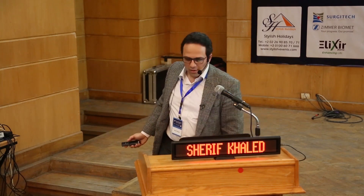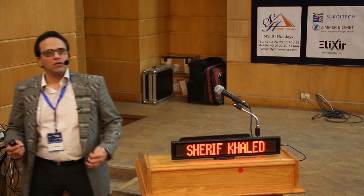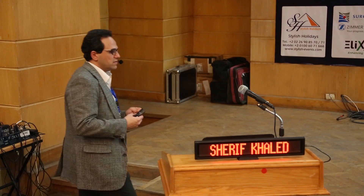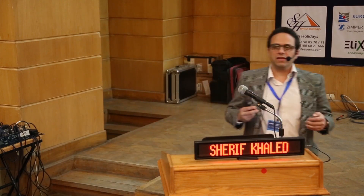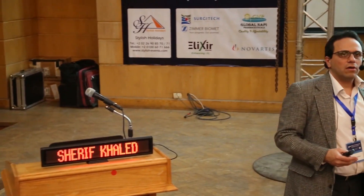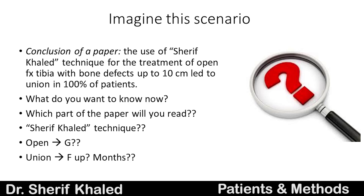Patience and methods — what's the importance of patience and methods in your thesis or paper? Let's imagine this scenario: you read a paper and find the conclusion that says the use of Sharif Khaled technique for treatment of open TBN fractures with bone loss of 10 cm would lead to 100% union in all patients. What do you want to know now? You want to know the technique used, which type of open fractures — Castello 1, 2, or 3 — and how many months it took to unite, the follow-up duration. That's why patients and methods is very important.